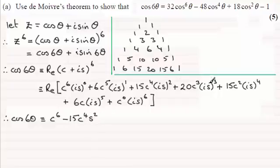Then this term will be imaginary, this term will be real. We've got i⁴ which is +1, so you're going to get +15c²s⁴. And then we've got imaginary here, this will be real and it will come out as i⁶ as -1, so that's going to be minus s⁶.